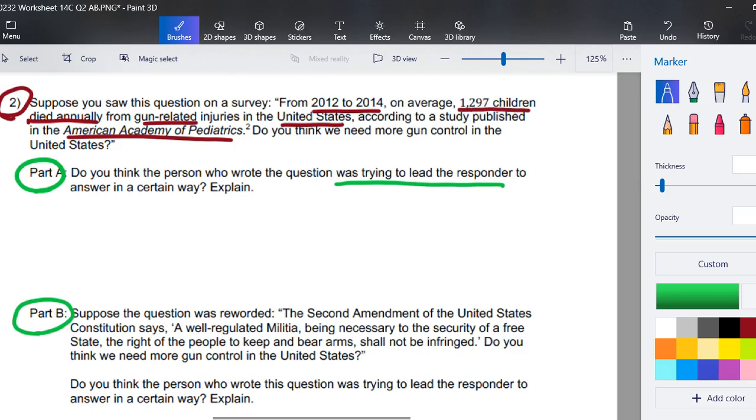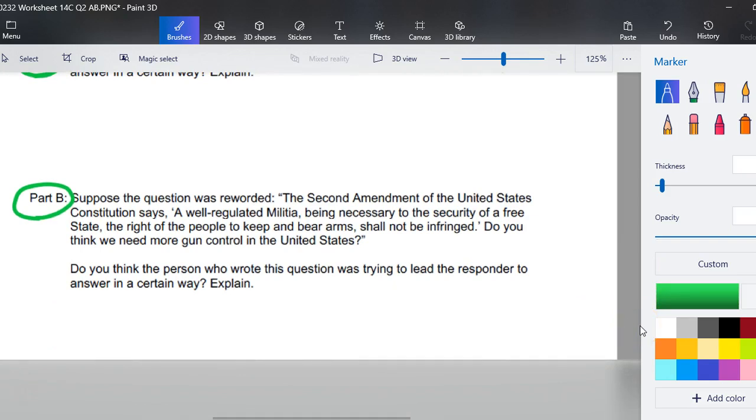Part B. Suppose we reworded the question. The Second Amendment of the United States Constitution says a well-regulated militia being necessary to the security of a free state, the right of the people to keep and bear arms shall not be infringed. Do you think we need more gun control in the United States? Do you think the person who wrote this question was trying to lead the responder to answer in a certain way? Well yes. The researcher was trying to make an appeal to patriotism so that someone polled would be more likely to answer that more gun control is not needed.